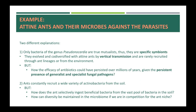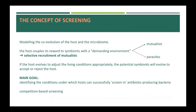In fact, it is known that the attine ants' cuticular microbiome contains many actinobacteria species and that they can produce active antibacterial and antifungal agents. The mutualistic presence of several bacteria raises two further problems. First, how does the ant selectively recruit beneficial bacteria from the vast pool of bacteria in the soil? And how can this diversity be maintained in the microbiome given competition for the ant niche? The concept of screening was introduced to model the co-evolution of the host and the microbiome.